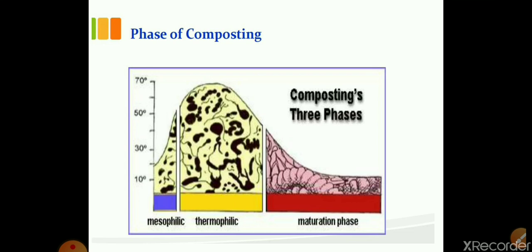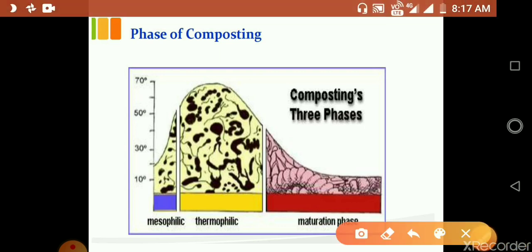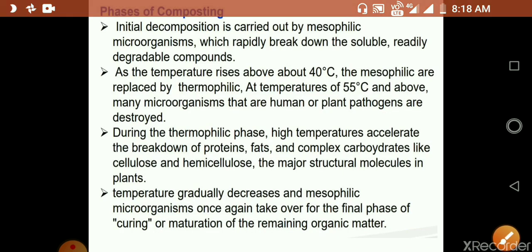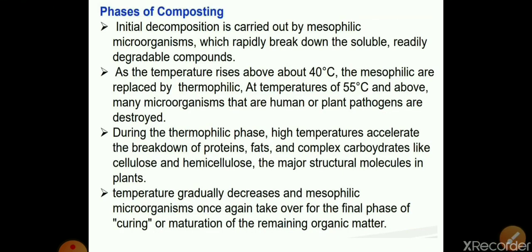The composting process goes through distinct phases. In the first stage, mesophilic bacteria undertake decomposition. As temperature increases, thermophilic bacteria take over. Finally, temperature decreases and the compost matures into humus. This can be seen in the graph showing mesophilic activity, followed by thermophilic activity, and then the final maturation stage.